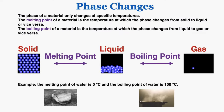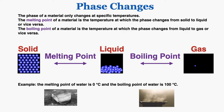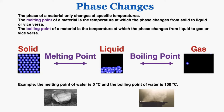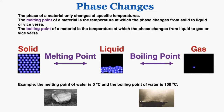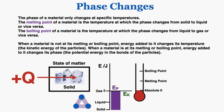The phase of a material only changes at very specific temperatures. The melting point is the temperature at which the phase changes from solid to liquid, and also where liquid changes back into solid. The boiling point is the temperature at which the phase changes from liquid to gas, or vice versa. For example, the melting point of water is 0°C and the boiling point is 100°C. When a material is not at its melting or boiling point, energy added changes its temperature — the kinetic energy of the particles. When it is at its melting or boiling point, energy added changes its phase — the potential energy in the bonds.